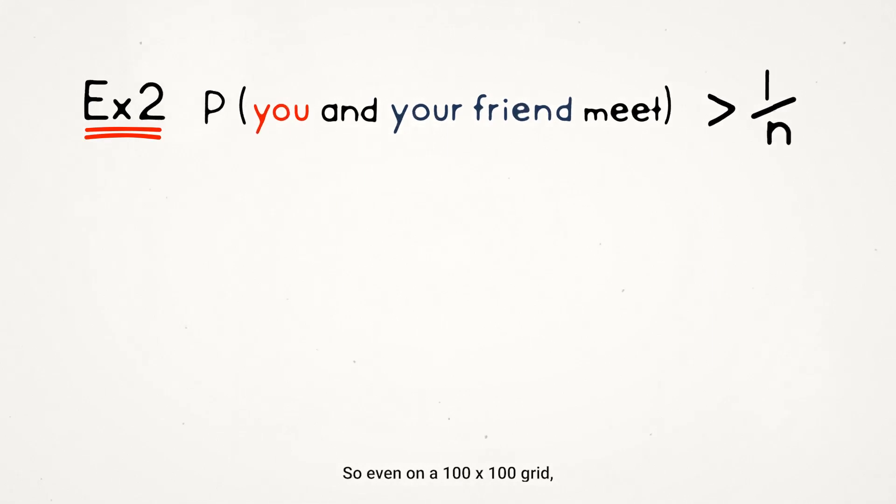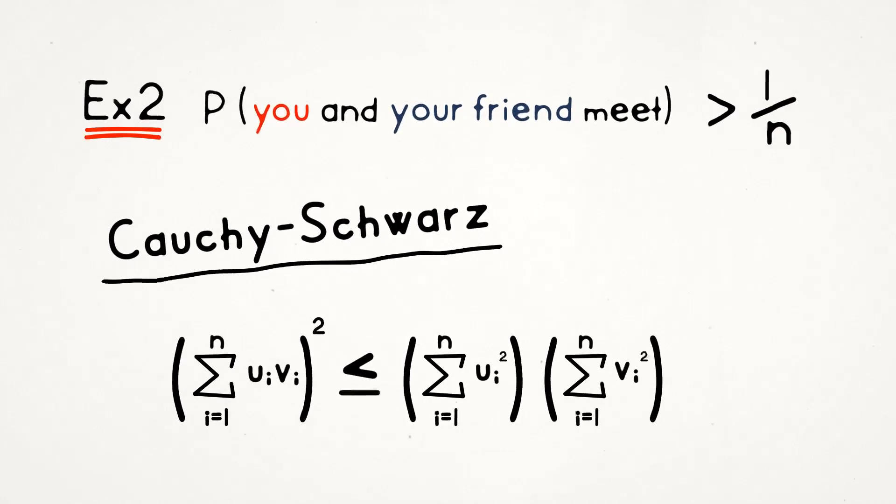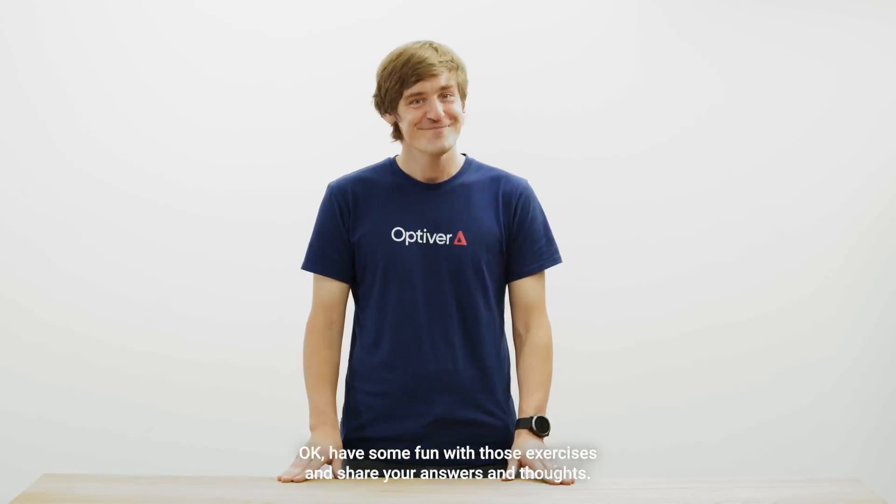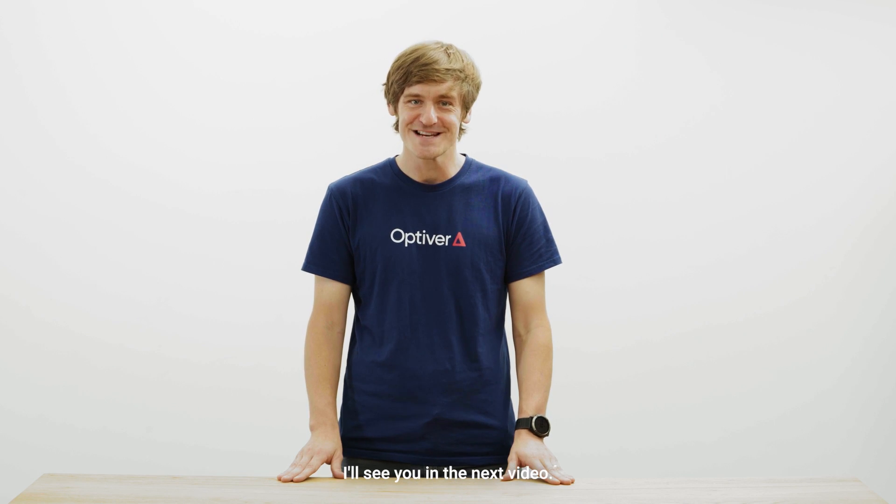So even on a 100 by 100 grid, you and your friend will still have at least a 1% chance of meeting. Not all hope is lost. And as a hint, you can use the Cauchy-Schwartz inequality for this one. Okay, have some fun with those exercises and share your answers and thoughts. I'll see you in the next video.